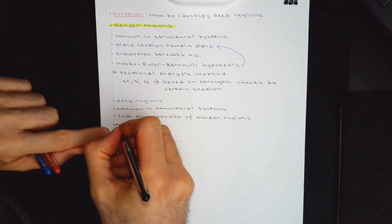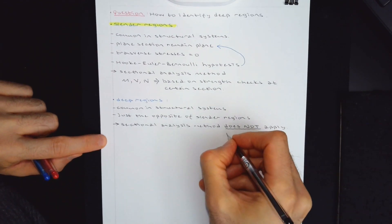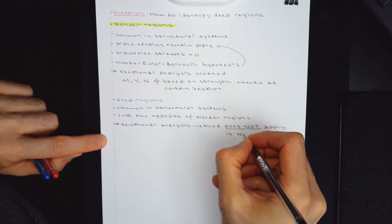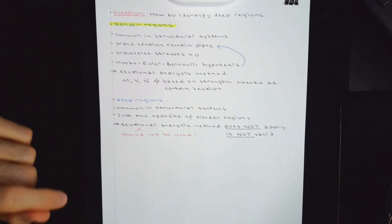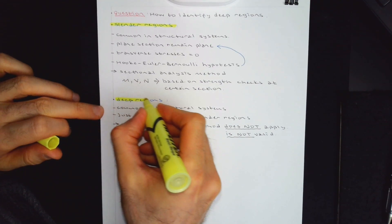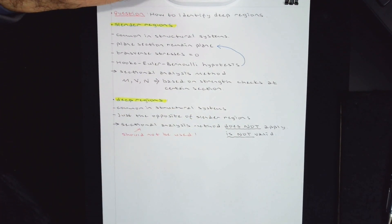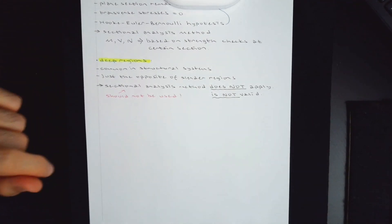I would say just the opposite of slender regions. You cannot use sectional analysis method. Sectional does not apply or is not valid. In other words, it should not be used. So let's look at how to identify deep regions.